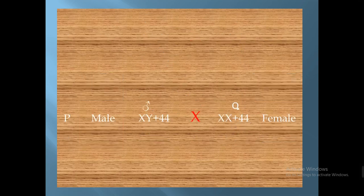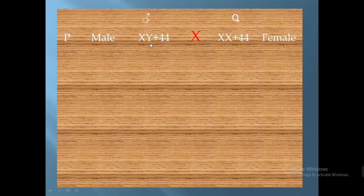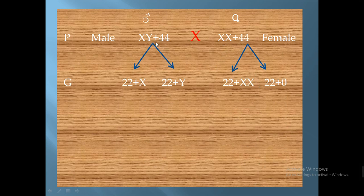But what will happen if, during meiotic division of the female's ovary, the division is abnormal? Some ova will contain 22 plus XX — the two X chromosomes do not separate from each other — while the other ova have no X chromosomes at all, containing 22 plus 0. This is abnormal. If fertilization occurs between these abnormal ova and any sperm type, it will produce an abnormal child.